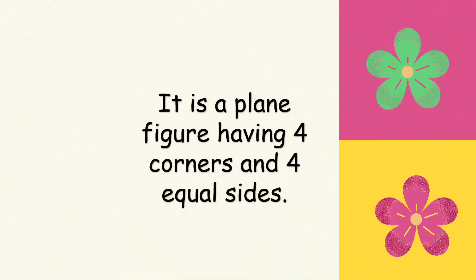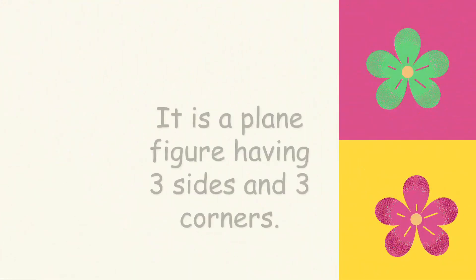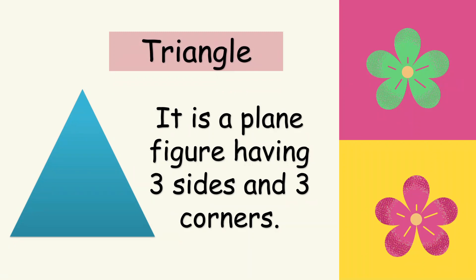Next, this is a plain figure having four corners and four equal sides. It looks like a rectangle, but all four sides are equal. It's a square. And a plain figure having three sides and three corners is a triangle. We can also say triangle because it has three angles — triangle has three sides, three corners, and three angles.